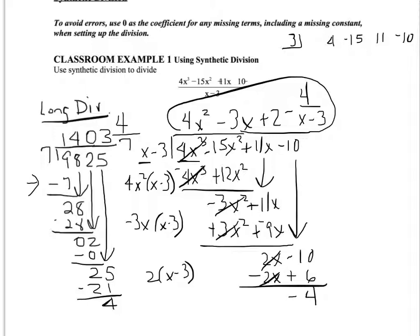Here is how synthetic division works. Draw a line and always start by bringing down the first coefficient — so I have a 4 on the bottom. Multiply 4 times the divisor 3 and write it beneath the next term. Add: negative 15 plus 12 gives negative 3. Multiply negative 3 times 3 to get negative 9, write that under the next term. 11 minus 9 gives 2, and 2 times 3 is 6, so negative 10 plus 6 is negative 4.